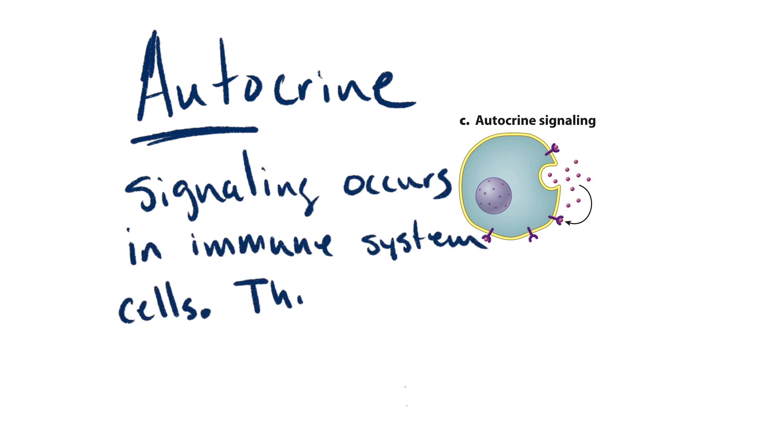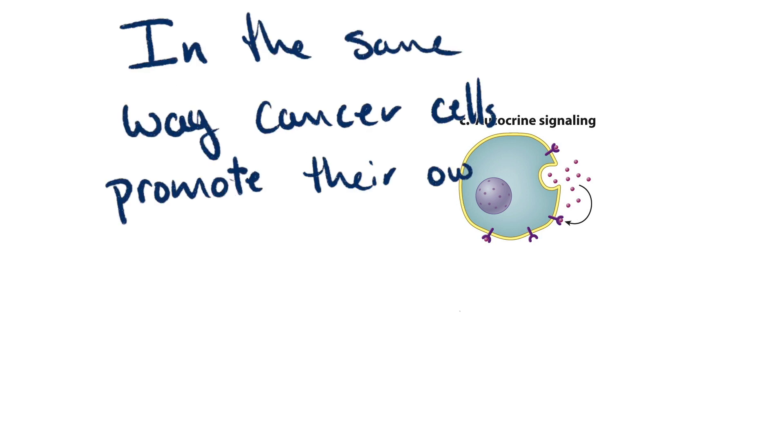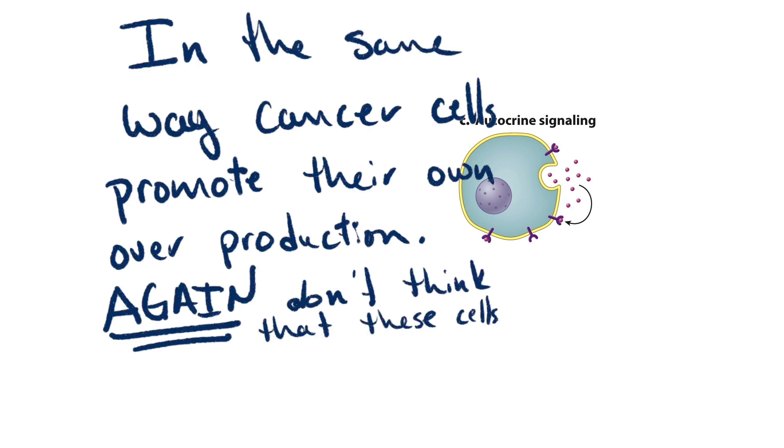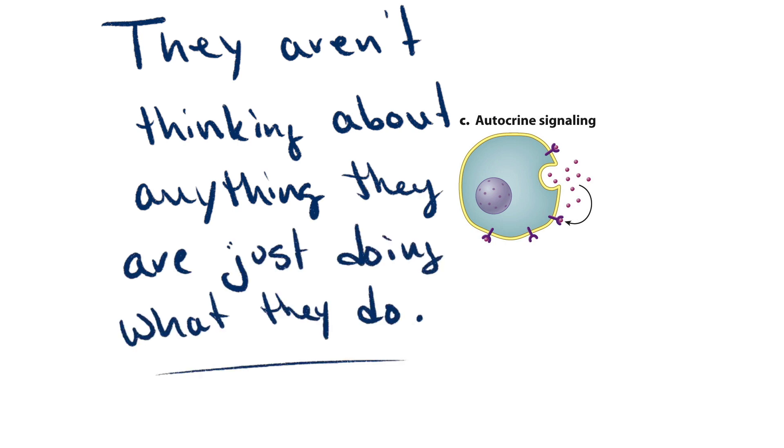Autocrine signaling occurs in immune system cells. This causes a self-perpetuating process so these immune system cells can make lots of copies of themselves. Autocrine signaling is the same way that cancer cells promote their own overproduction. Again, don't think these cells are thinking about doing this overproduction—they're just doing what they do.